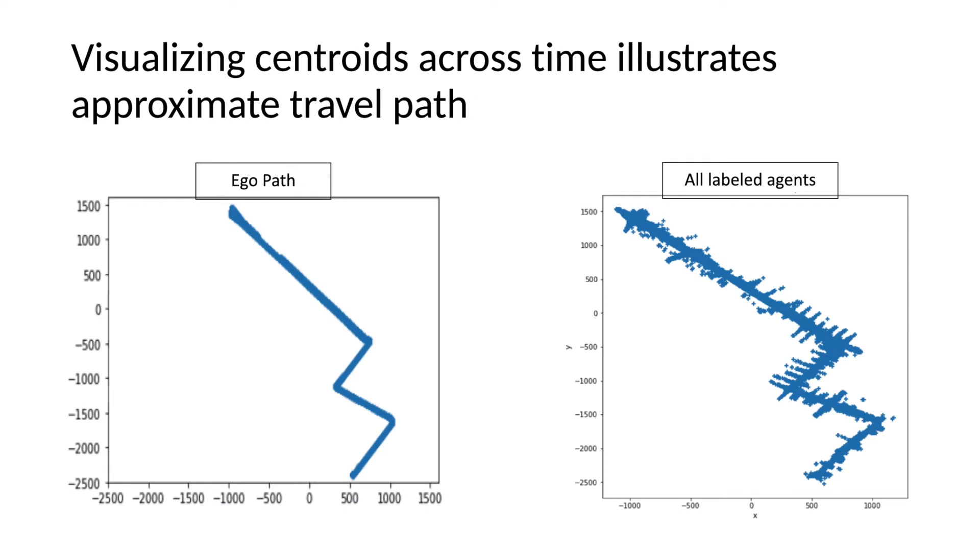To get a better idea of the information, we can take a look at it across time. So here on the left, we see the path of the ego car. Ego meaning a car that has the many sensors attached and is collecting data on its surroundings, on its surrounding agents. Now on the right, you can see the actual information being collected. So across this time path that it travels from in the southeast direction, all of these little dots represent all of the different agents that it interacts with.